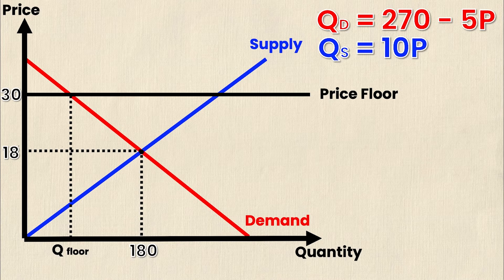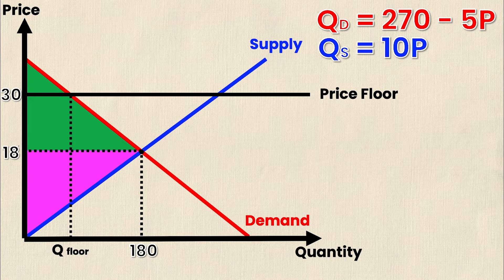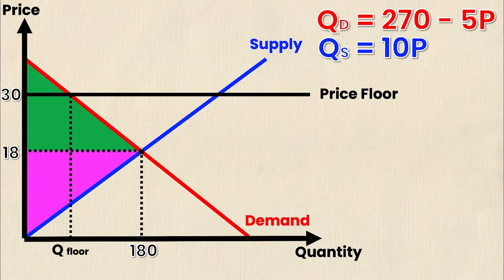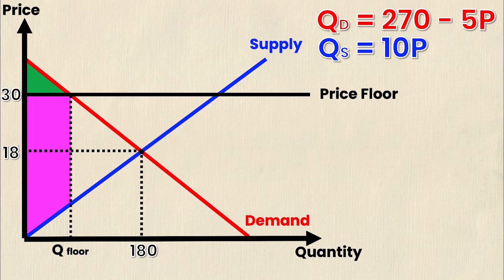So going back to our previous triangles, we know that the consumer surplus is the green triangle and the producer surplus is the pink triangle. Recall the definition of consumer surplus and producer surplus. Consumer surplus is above the market price and below the demand curve. Producer surplus is above the supply curve and below the market price. Well the market price is no longer 18.